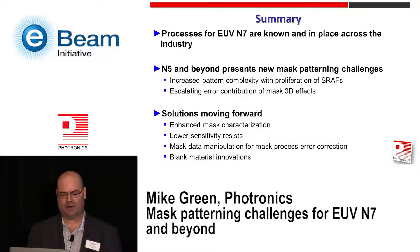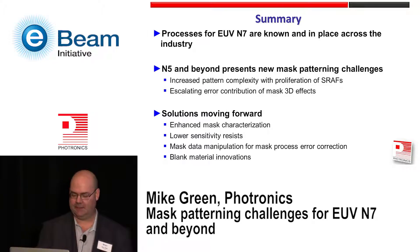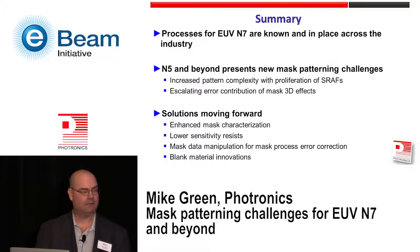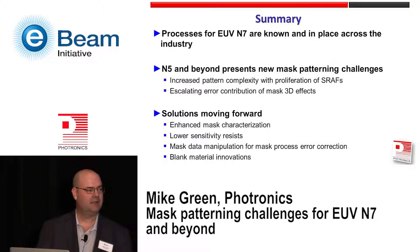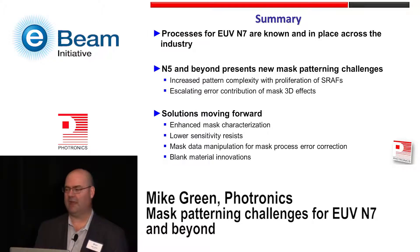In summary: processes for EUV N7 are known and in place across the industry. N5 and beyond presents new mask patterning challenges, such as increased pattern complexity with the proliferation of SRAFs and escalating error contribution of mask 3D effects. The solutions moving forward are also known: enhanced mask characterization, lower sensitivity resists, mask data manipulation for mask process error correction, and blank material innovations.